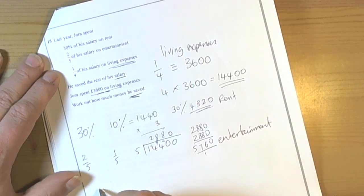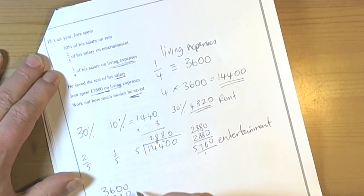So we've spent £3,600 on living expenses, £4,320 on rent, and £5,760 on entertainment. So this is how much we've spent altogether. So 0, 8, 9, 7, 16, 1 carry, 3, 7, 12, 13. So we've spent £13,680 on living.